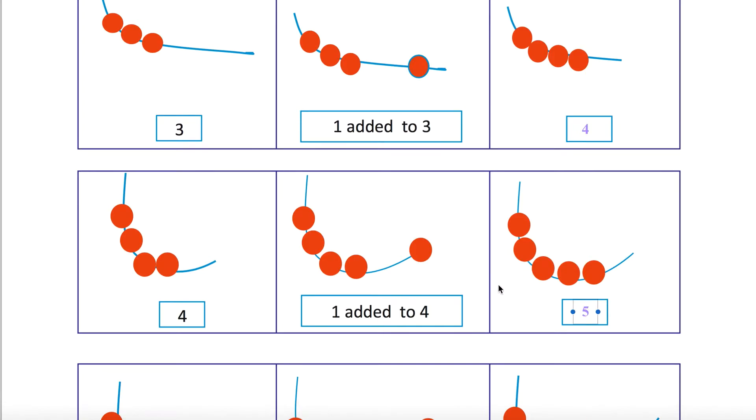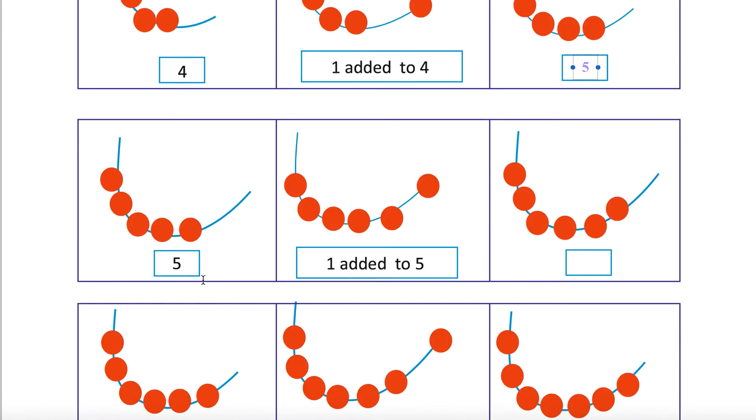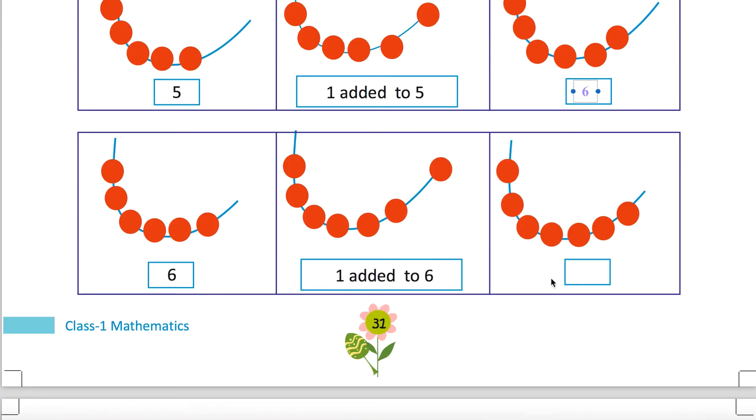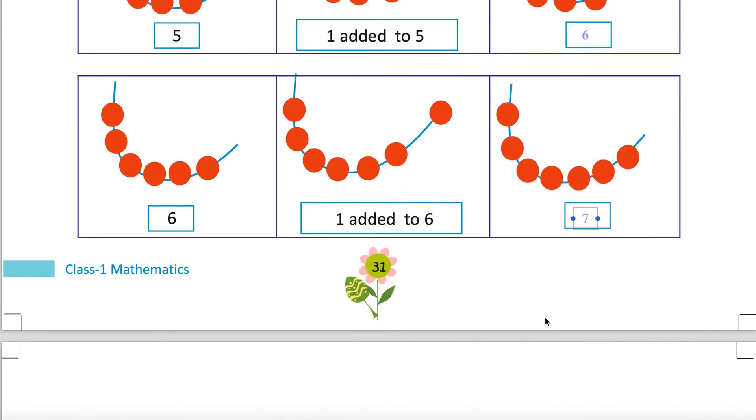Four plus one equals five. Five are there, again one is added, they become six. Six are there, now add one, seven. Six plus one equals seven.